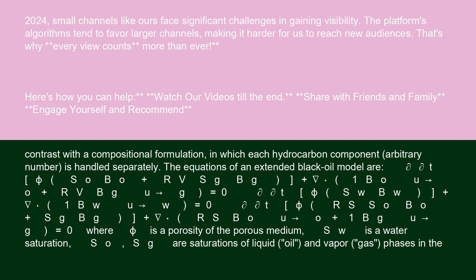The equations of an extended black oil model are: del-del-t phi So Bo plus Rv Sg Bg plus nabla 1 Bo Uo plus Rv Bg Ug equals 0; del-del-t phi Sw Bw plus nabla 1 Bw Uw equals 0; del-del-t phi Rs So Bo plus Sg Bg plus nabla Rs Bo Uo plus 1 Bg Ug equals 0, where phi is the porosity of the porous medium.